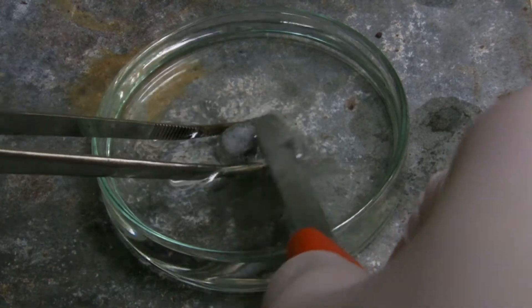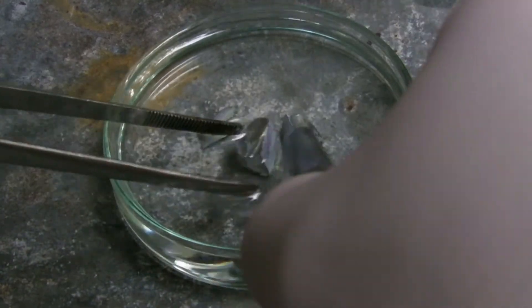First the oxide layer is removed from a piece of potassium. It is cut under paraffin oil to prevent the reaction with oxygen and humidity.